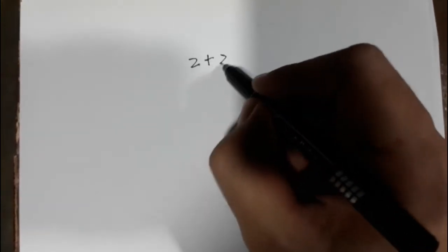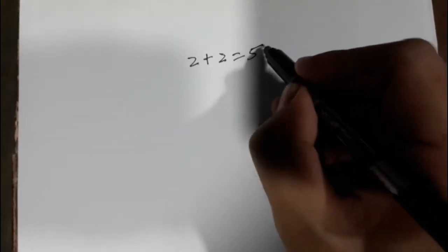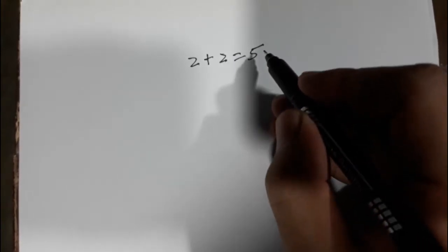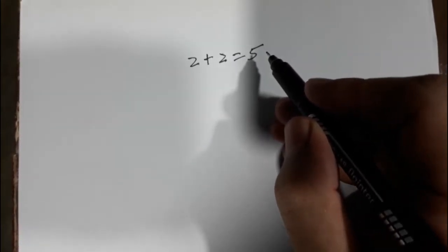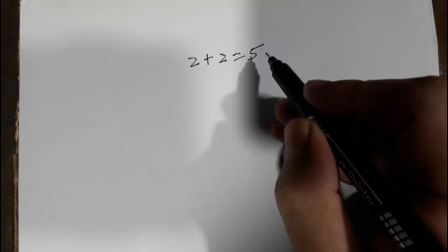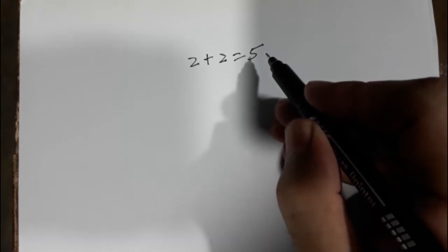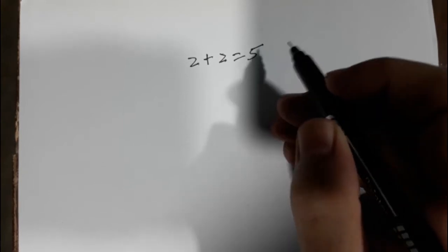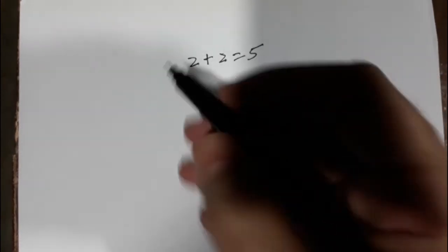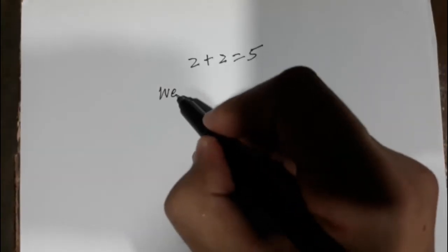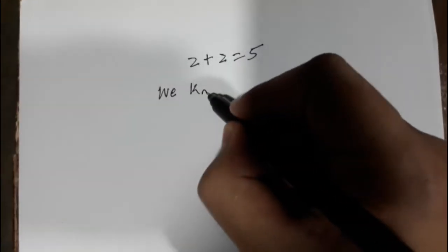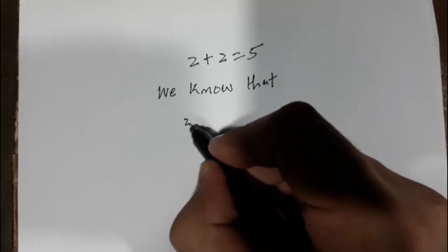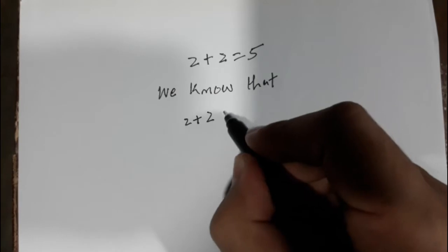2 plus 2 equal to 5 — is it possible? It is impossible, but I would prove this in this video. I will make a tricky mistake in this, so you have to find the mistake. If you find the mistake, you would be a mathematics genius. So as we know that 2 plus 2 is equal to 4.